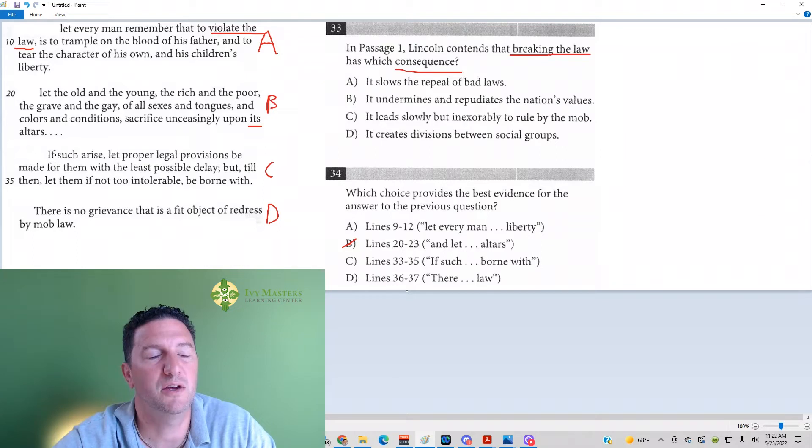Answer choice C. If such arise, and here again we have such, and again it's a line reference question, but you'd want to read before to see what such is referring to. If such arise, it's referring to grievances. That was mentioned in the previous sentence. If grievances arise, let proper legal provisions be made for them with the least possible delay. But till then, let them, if not too tolerable, be born with. He's saying follow the law. If there's something wrong with it, we should change it. But follow the law until we change it. That's what answer choice C is saying. But it's not talking about breaking the law. A looks like it's still a correct answer.